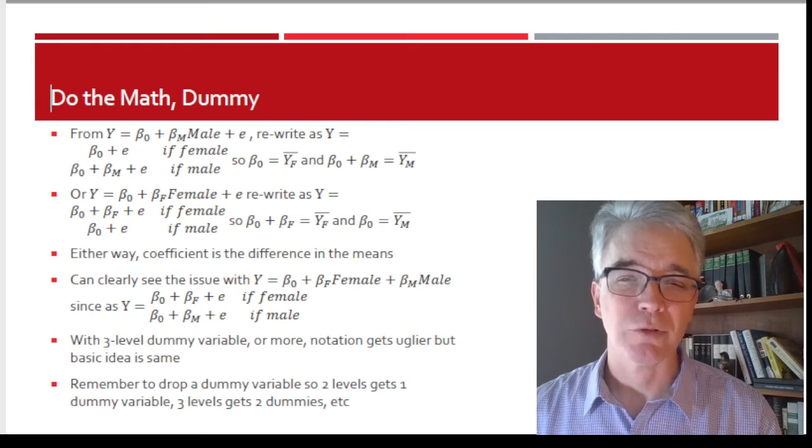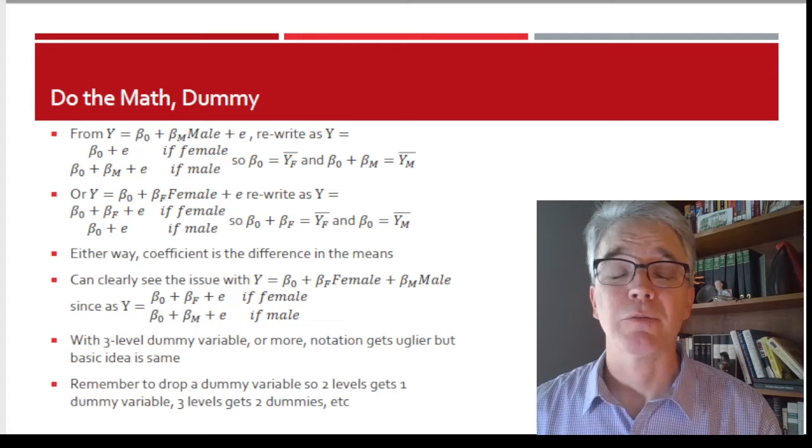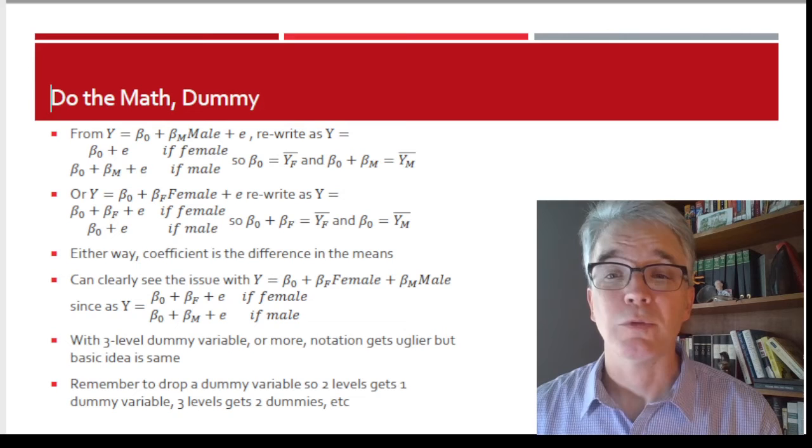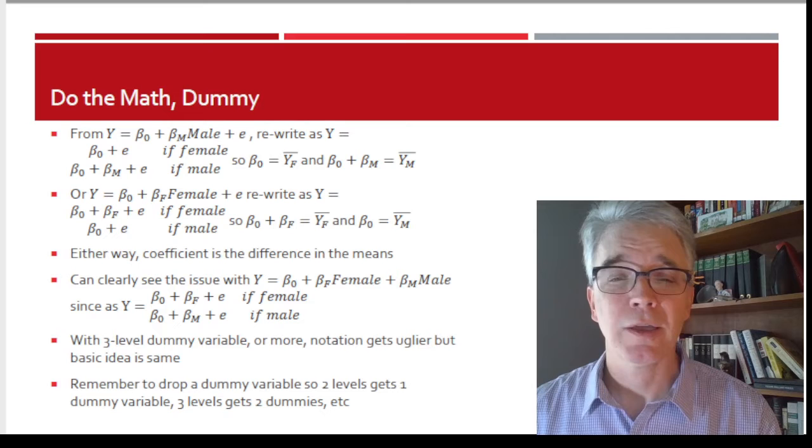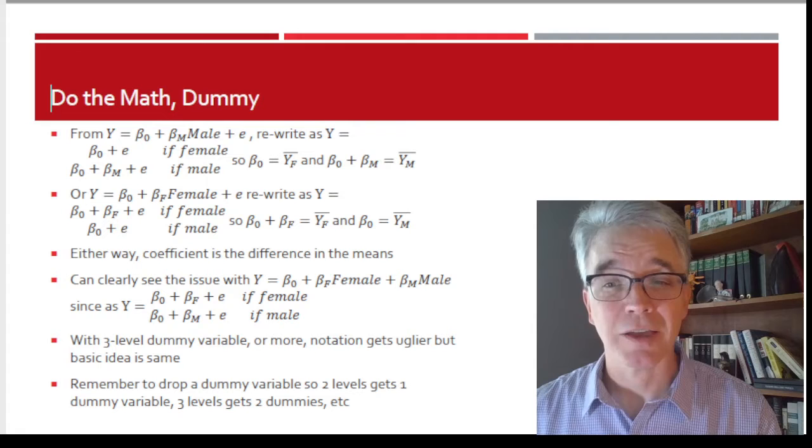So βₘ is then, well, how much are men different? So, alternately, if Y = β₀ + βₓFemale, then again, you can write that in two lines. So, the Y value is going to be β₀ + βₓ + ε for females and just β₀ + ε for the males.